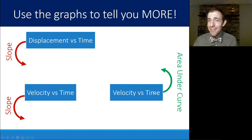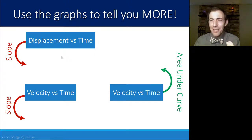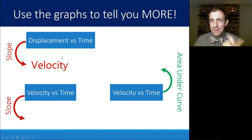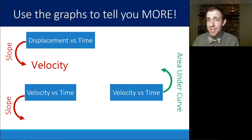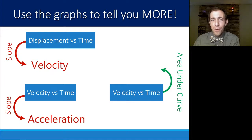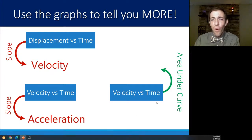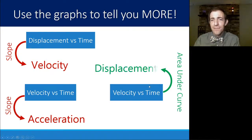To summarize: the graphs tell you a lot. If you have a displacement versus time graph, the key thing is reading the slope to find velocity. If you have a velocity versus time graph, you're either finding acceleration by using slope, or using the area under the curve to find displacement.